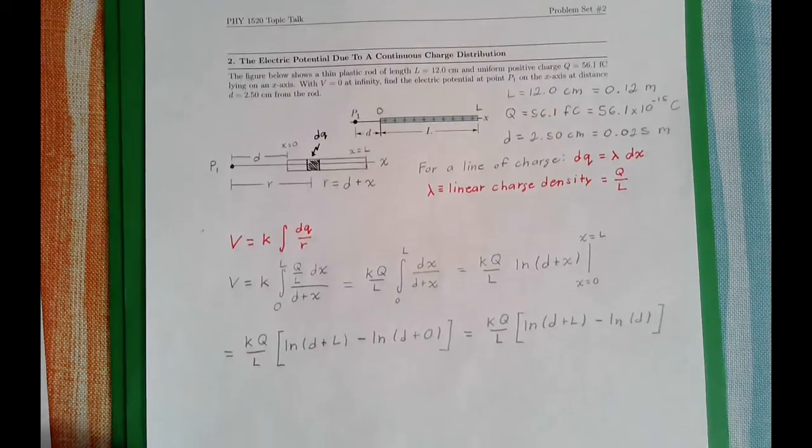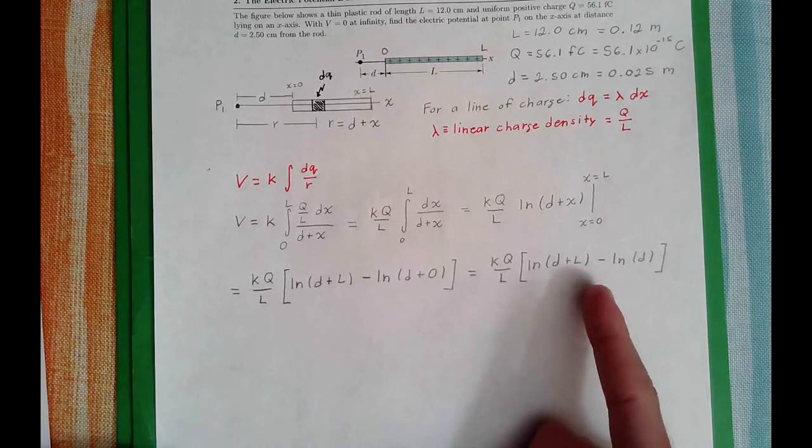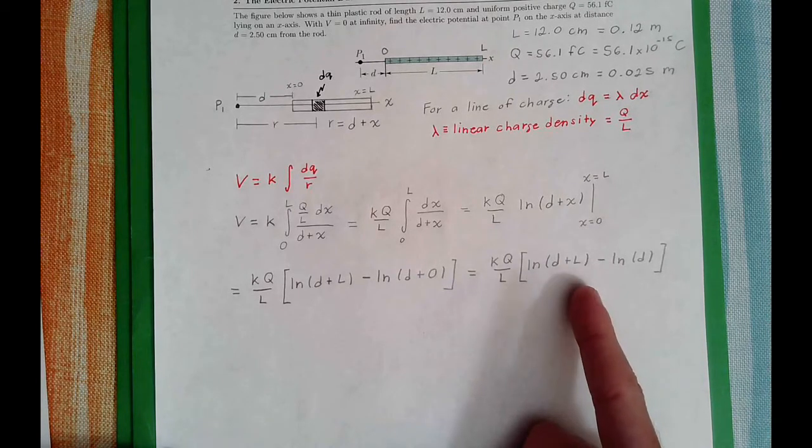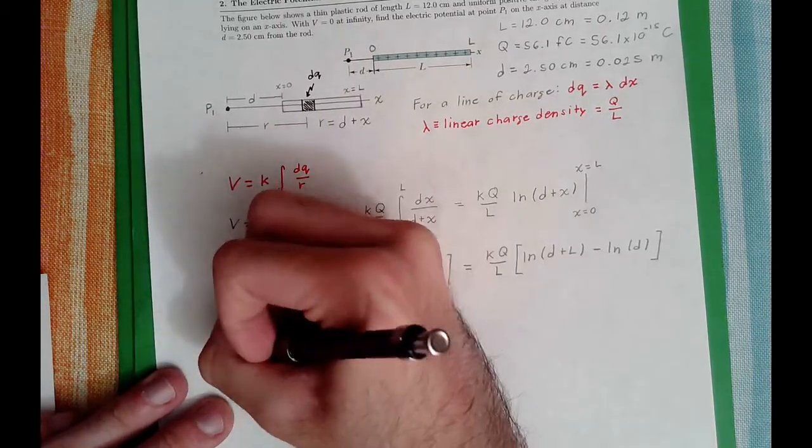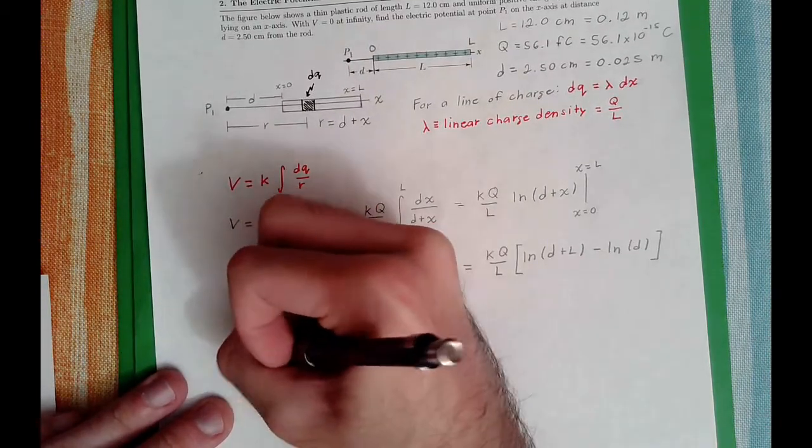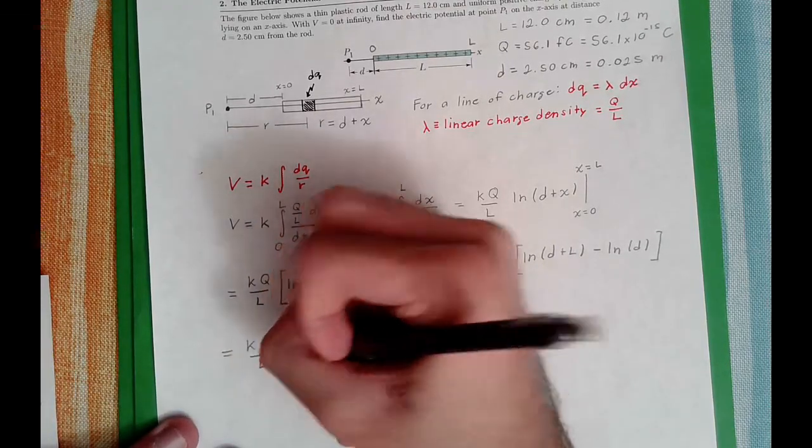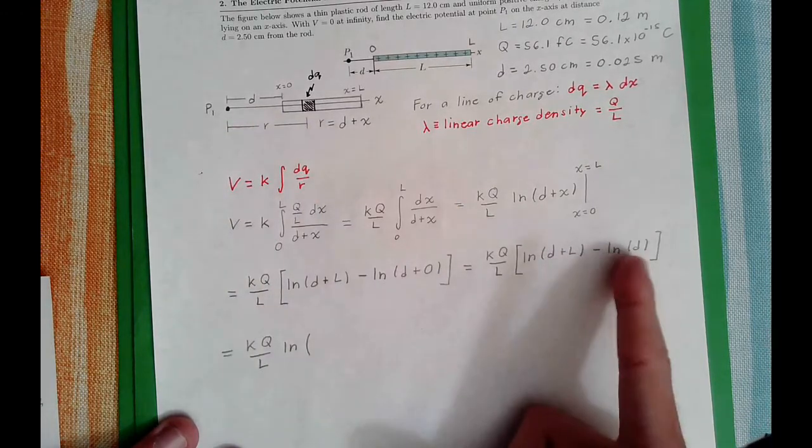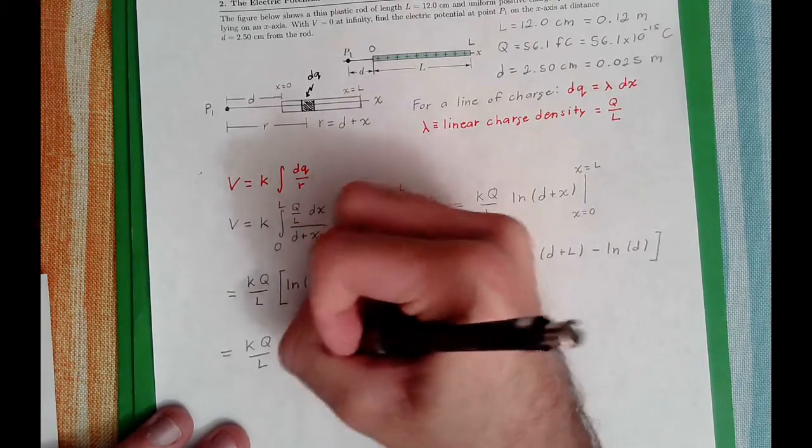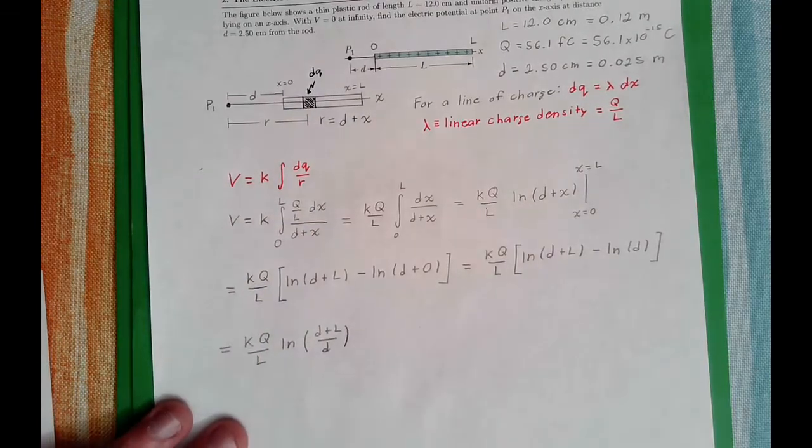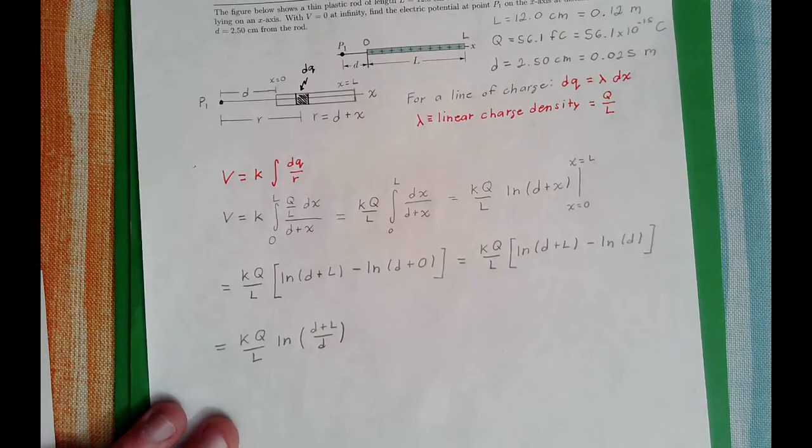Before I start plugging in some numbers here, I can simplify this using a natural logarithm rule for subtraction. When you're subtracting two logarithms, it is just the arguments that are being divided by each other. So in this case, we can write this as D plus L over D. Getting from here to here is just simply by rules of logarithms.